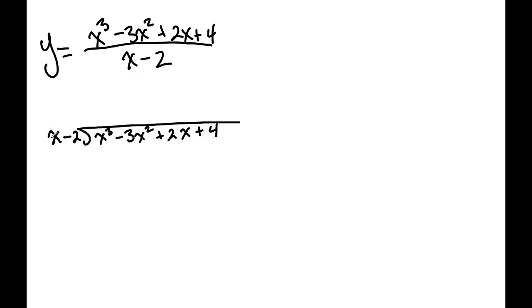So to do the division, you ask yourself what do you need to multiply x by to get x cubed? Well that's x squared. So I'm going to put it here. Notice I line it up over the squared function. So that's x squared, so then we multiply just like regular division: x squared times x is x cubed, x squared times that is minus 2x squared.